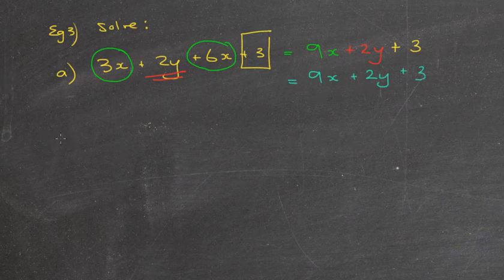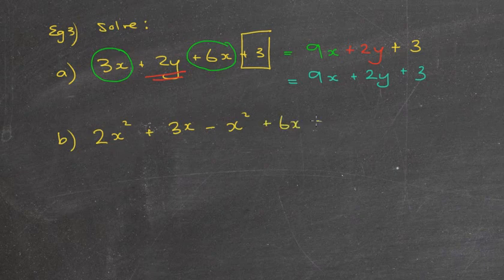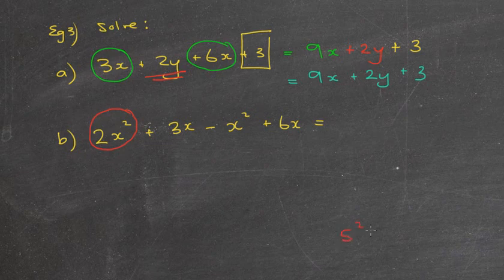I'm going to do one more example before I give you a couple of questions. This is a harder one. I'm going to give you 2X squared plus 3X minus X squared plus 6X equals. So let's have a look at this first one. Now, we've got this X squared business here. Do you remember what X squared means? Well, hopefully you remember. If I look at 5 squared, that means 5 times 5. So X squared just means X times X. It's just another way of saying X times X. It's a little bit neater.